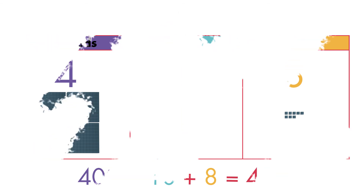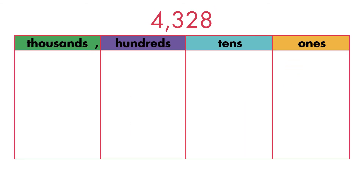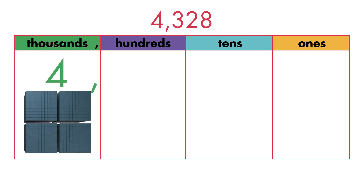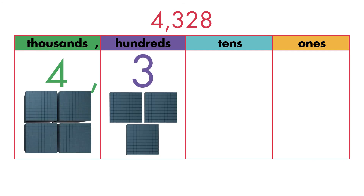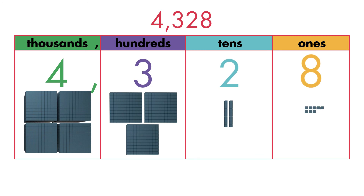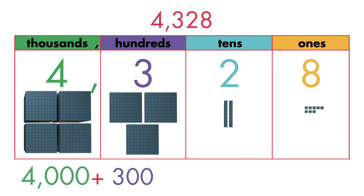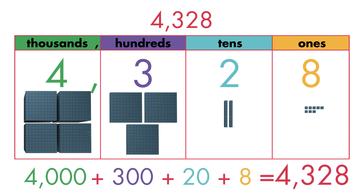The value of the digit 4 in 4,328 is 4,000. Now you know about the place value of digits and how to write a number in expanded form.